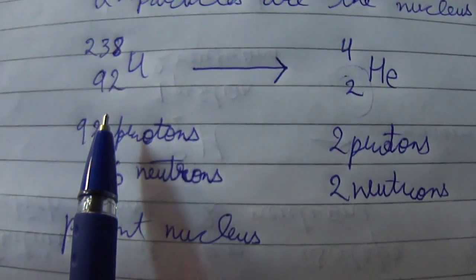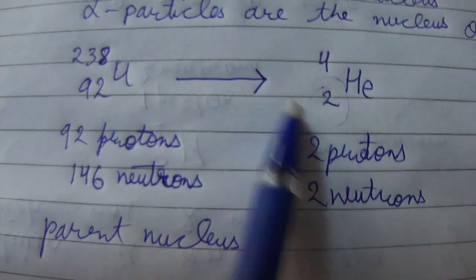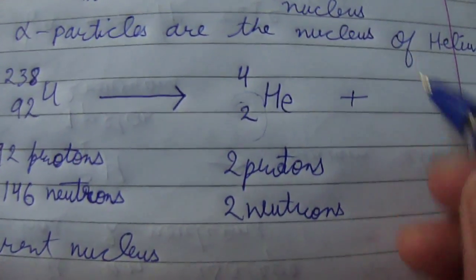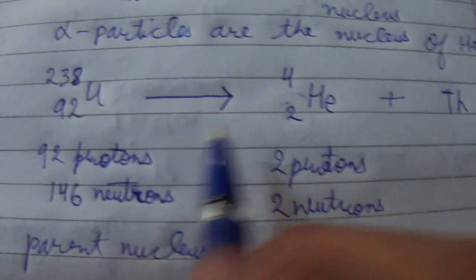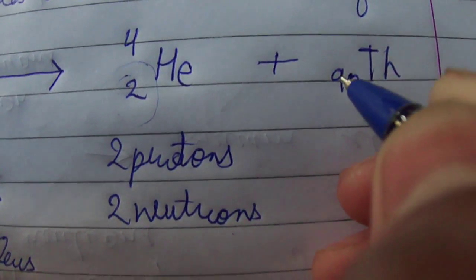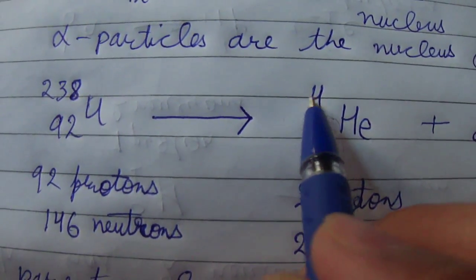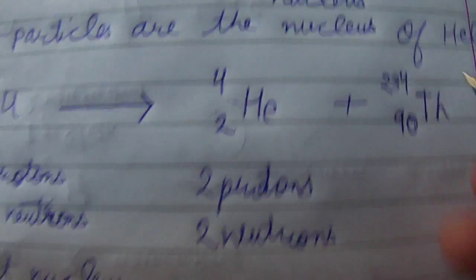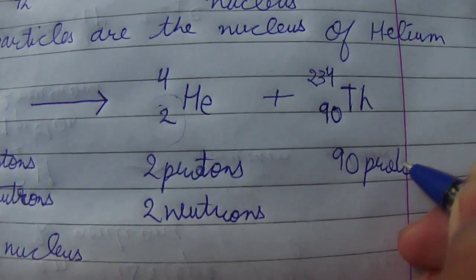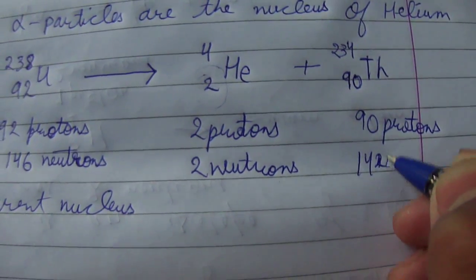In the alpha emission of uranium, out of 92 protons one alpha particle is formed with 2 protons and atomic mass 4. The other atom formed will be thorium — subtracting 2 protons from 92 gives 90, and the atom with 90 protons is thorium. Subtracting 4 from atomic mass 238 gives 234, so the new thorium atom has 90 protons and 144 neutrons.